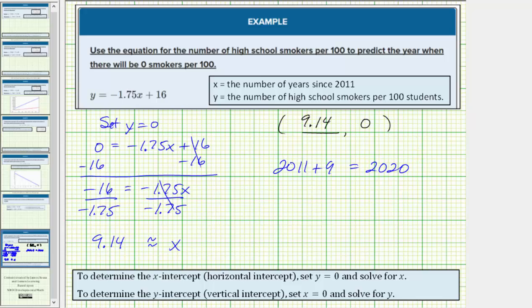So based upon the model, there will be zero high school smokers per 100 in approximately the year 2020.